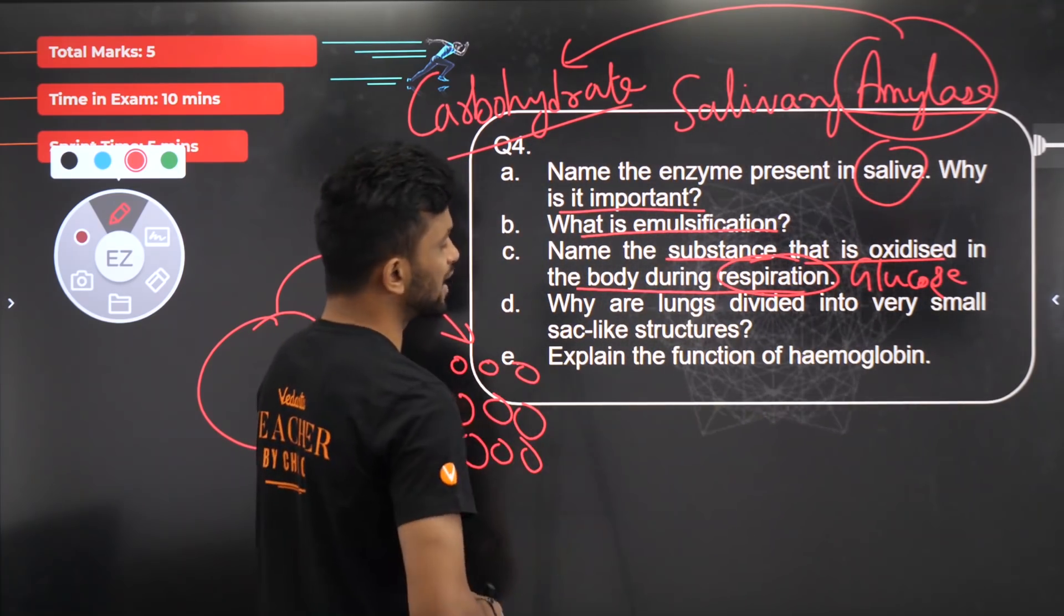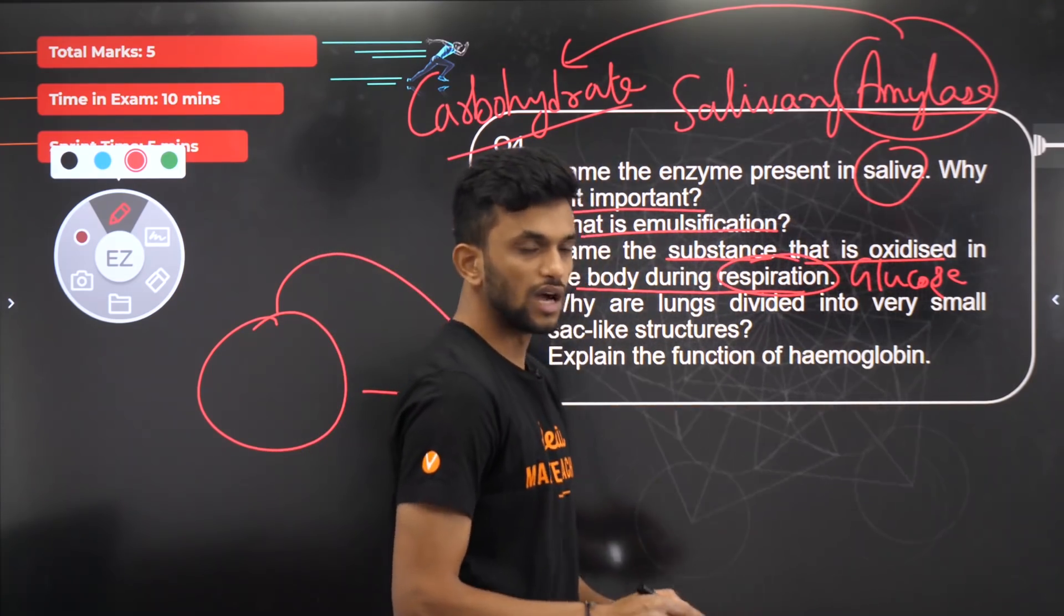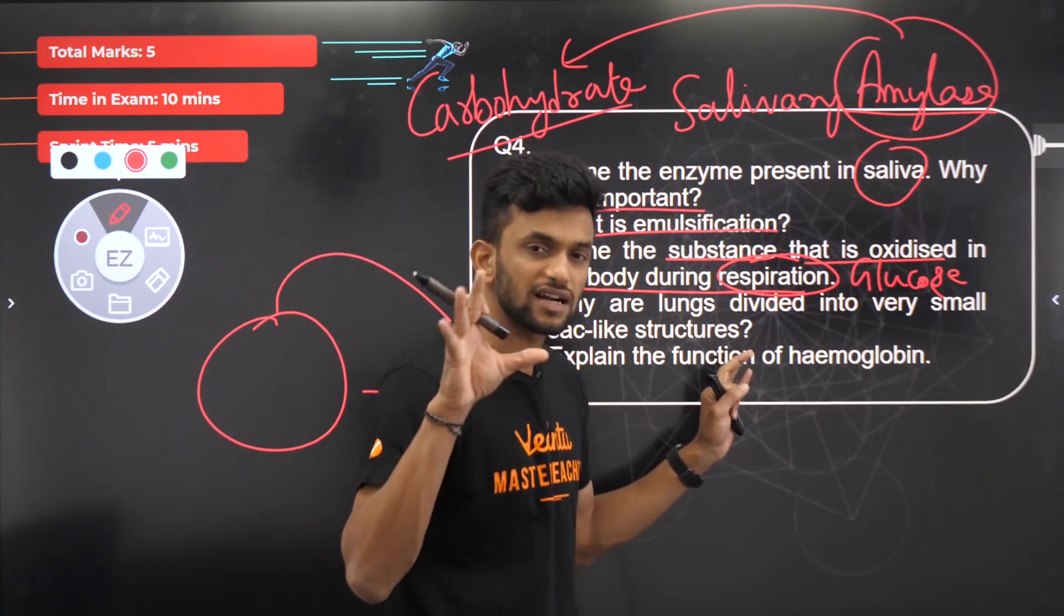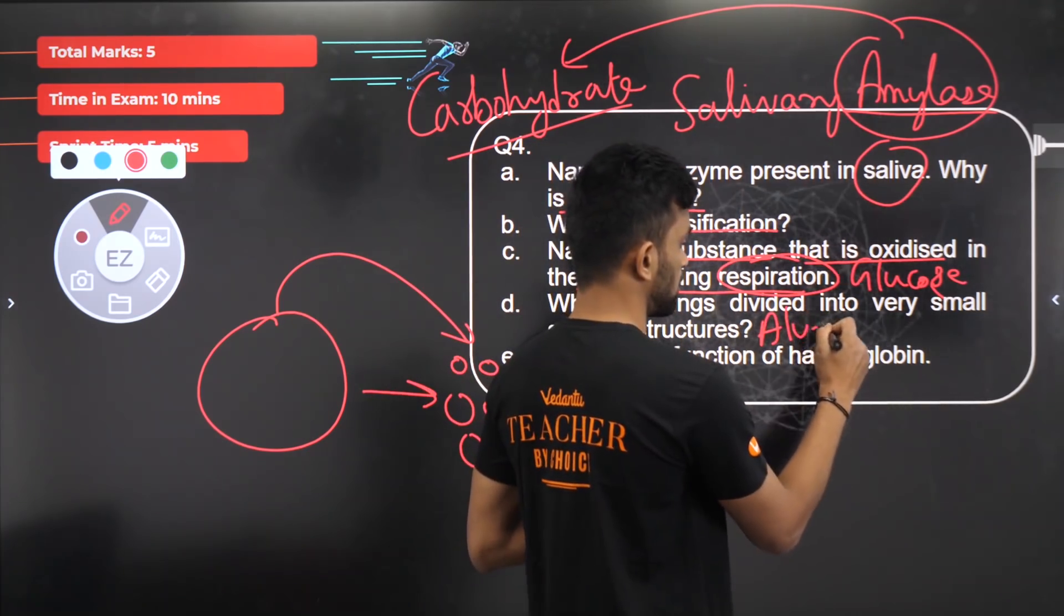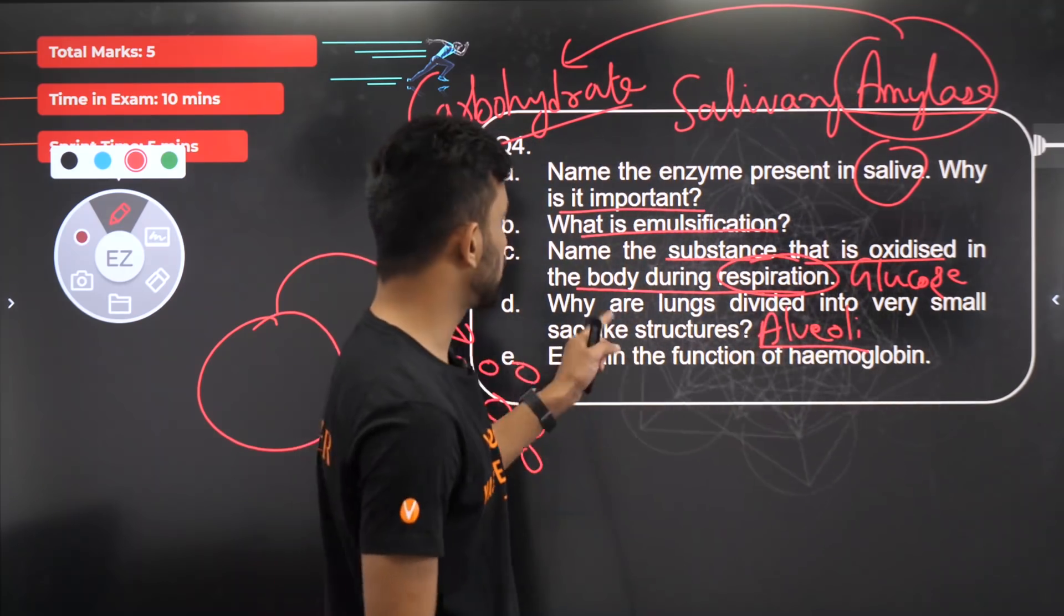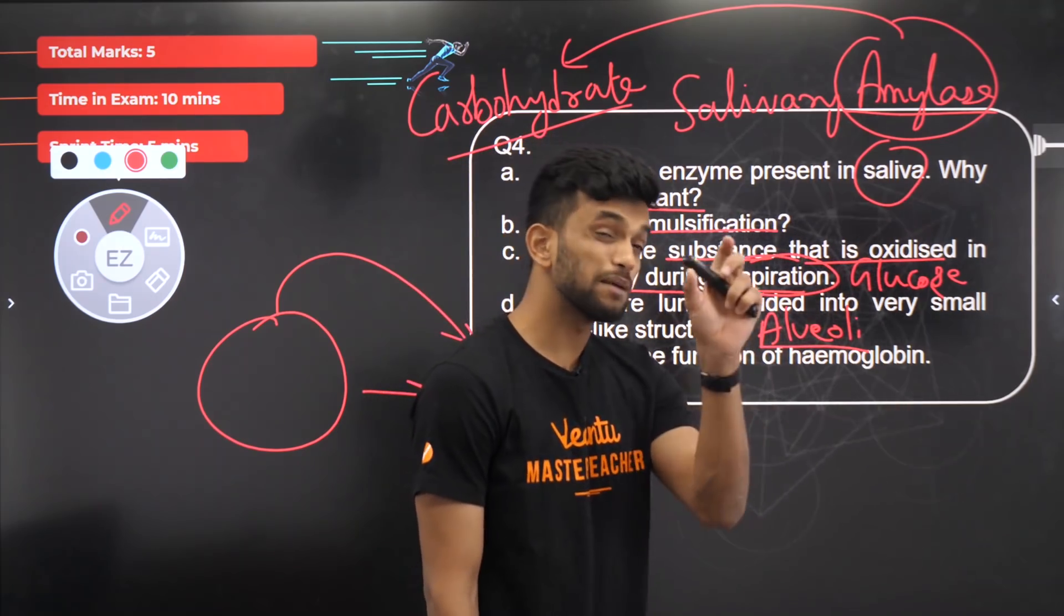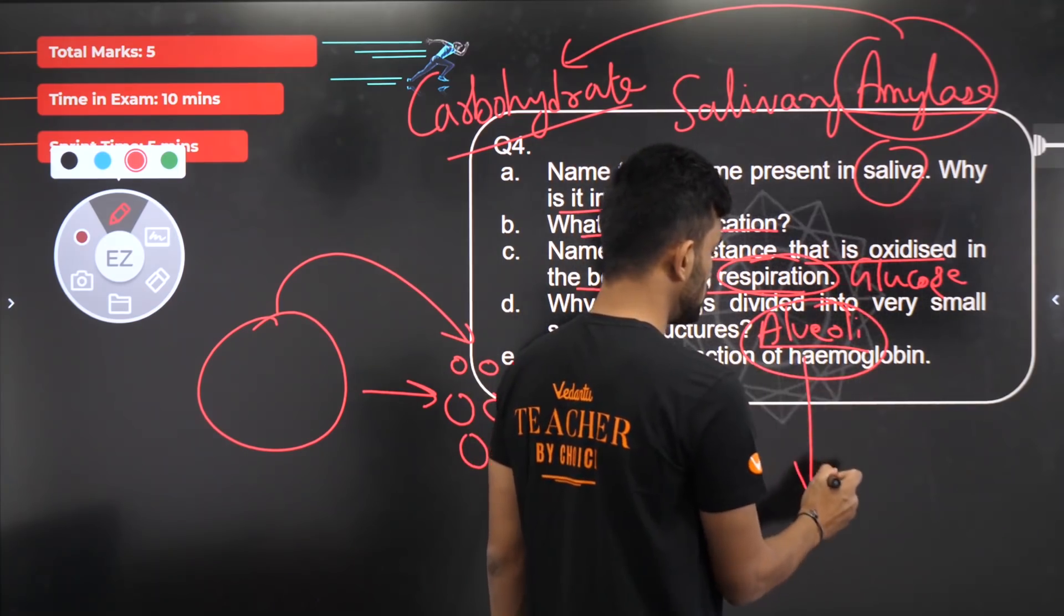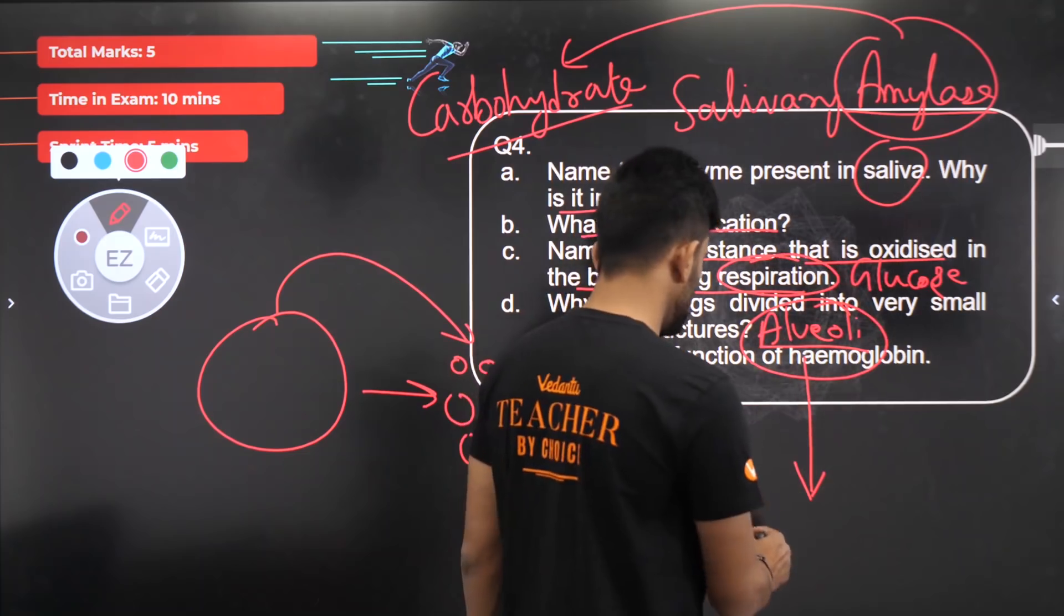Why are lungs divided into very small sac-like structures? Why do we have alveoli in our lungs? Alveoli are present to increase the surface area. They are present to increase the surface area of the lungs for absorption of gases.